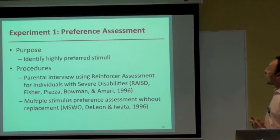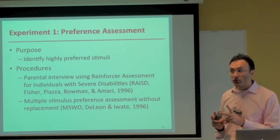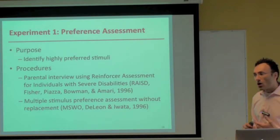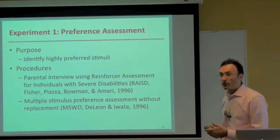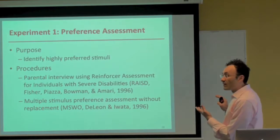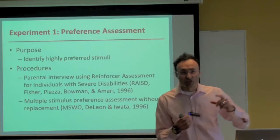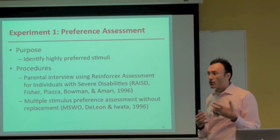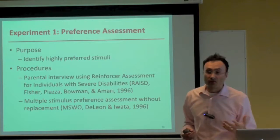We did three experiments. The first was a preference assessment to identify highly preferred stimuli, using two procedures: the RAISD — the Reinforcer Assessment for Individuals with Severe Disabilities, based on Fisher and colleagues from 1996 — an excellent indirect means of assessing preferences that takes about 15 minutes and hierarchically ranks stimuli from most to least preferred across auditory, visual, and olfactory domains. Then I conducted an experiment using the Multiple Stimulus Preference Assessment without replacement, based on De Leon and Iwata from 1996.